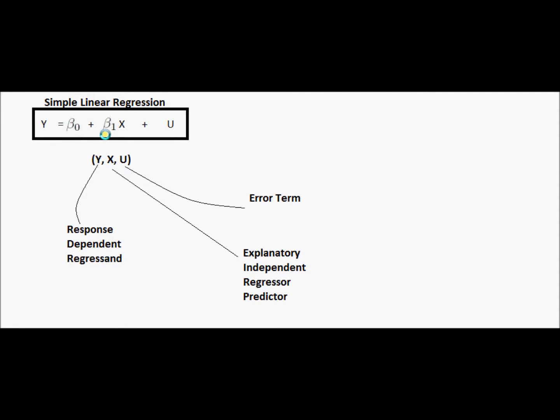Beta zero and beta one, those are coefficients of our regression model. And we're thinking of those as constants, and they're unknown constants that we would like to estimate. The beta zero coefficient is called the intercept, and the beta one coefficient is called the slope.